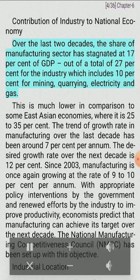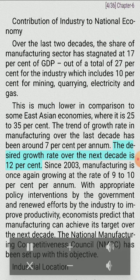Contribution of industry to national economy: Over the last two decades, the share of manufacturing sector has stagnated at 17% of GDP, out of a total of 27% for the industry which includes 10% for mining, quarrying, electricity and gas. This is much lower in comparison to some East Asian economies, where it is 25-35%. The trend of growth rate in manufacturing over the last decade has been around 7% per annum. The desired growth rate over the next decade is 12%. Since 2003, manufacturing is once again growing at the rate of 9-10% per annum. With appropriate policy interventions by the government and renewed efforts by the industry to improve productivity, economists predict that manufacturing can achieve its target. The National Manufacturing Competitiveness Council (NMCC) has been set up with this objective.